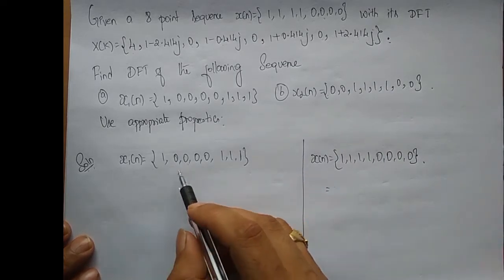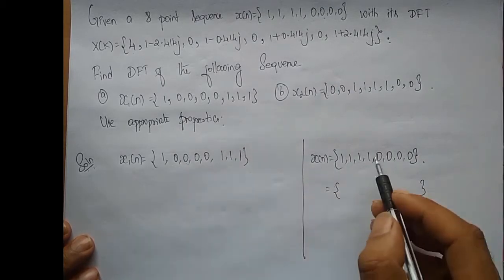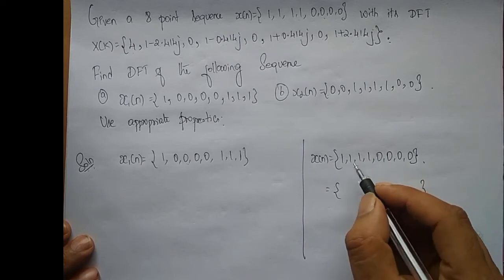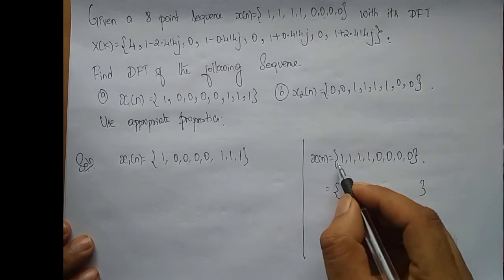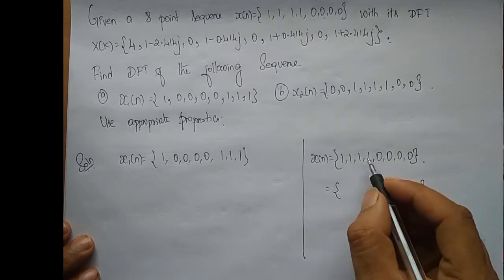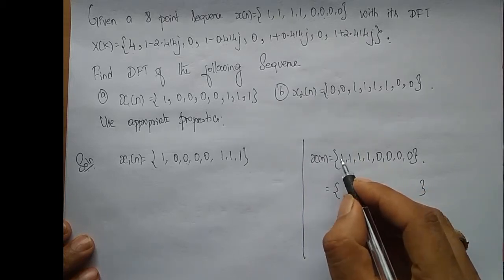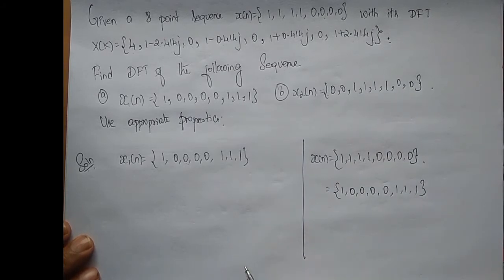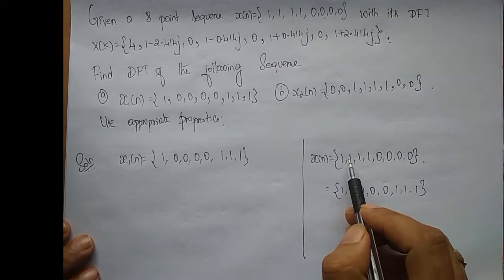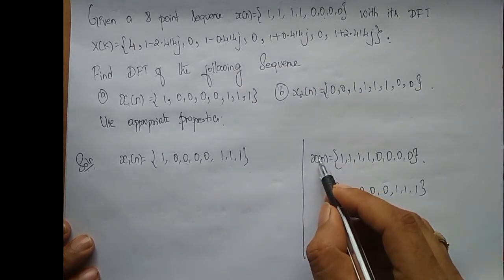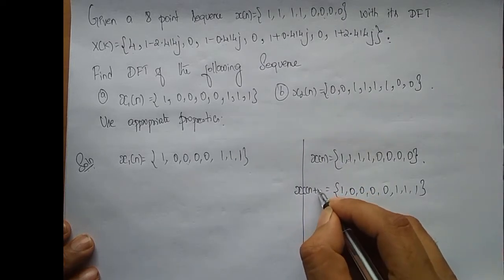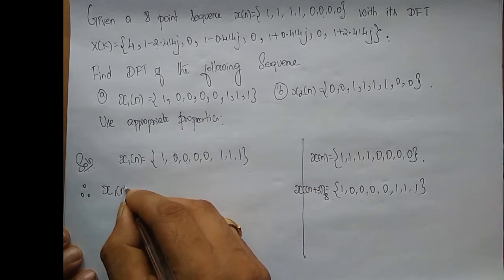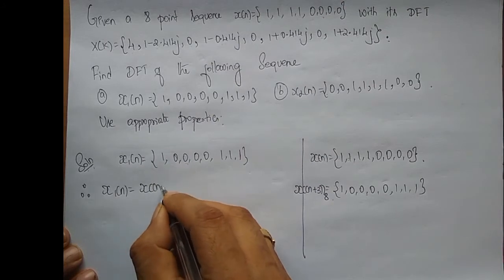Now can you find any relationship between these two? What's happening here is if I circularly shift this sequence left three times, this 1, 0, 0, 0, 0 comes at the beginning and the rest of the three samples go to the other side. If I shift it three times, these three go to the other side, so I end up with 1, 0, 0, 0, 0 and the other three 1, 1, 1. So these two are the same. This is nothing but X of n circularly shifted left three times, represented as X(n+3) mod 8, because the length of the sequence is 8. Therefore, X1 of n is equal to X of (n+3) mod 8.